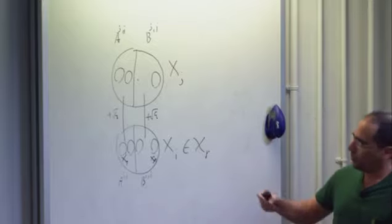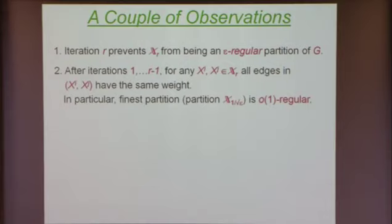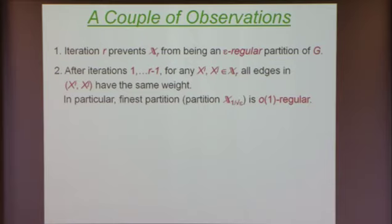If you disregard iterations r and later and take two clusters X_i and X_j — a perfectly uniform bipartite graph — then it's not hard to see that if you take the finest partition, the last partition where clusters are the smallest, then it's a perfectly regular partition. If you take any two clusters in this partition and look at the weights between edges there, all the edges have the same weight. The finest partition is a perfectly regular partition of the graph.